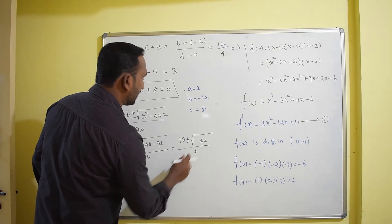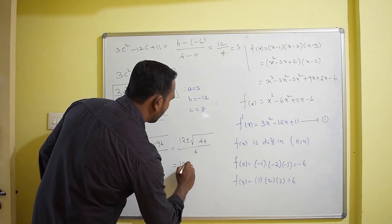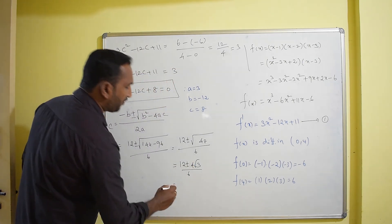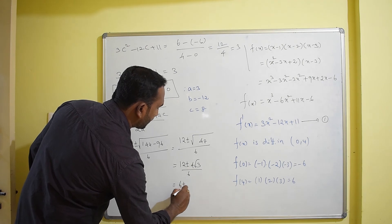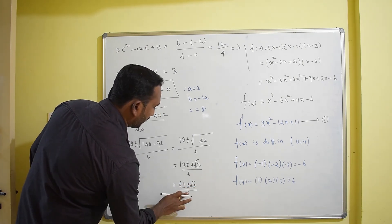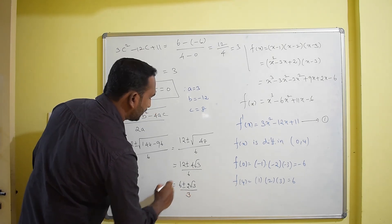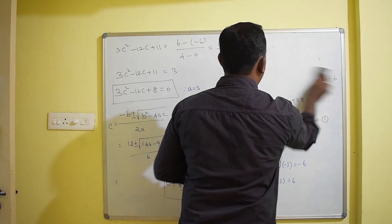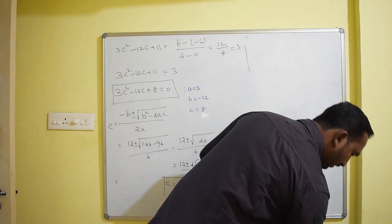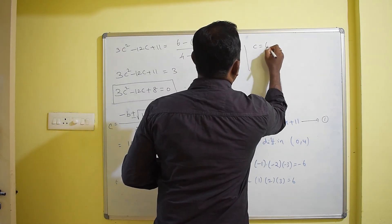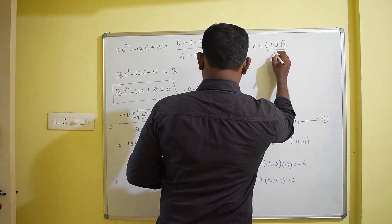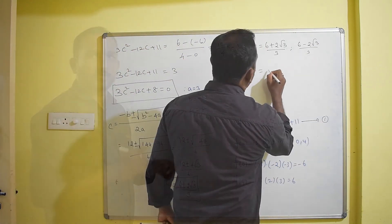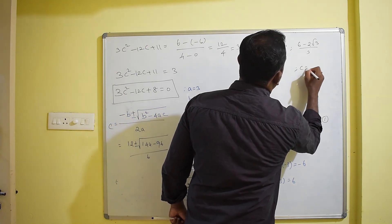Since 48 = 16 × 3, we have √48 = 4√3. So c = [12 ± 4√3] / 6. Simplifying by dividing numerator and denominator by 2: c = [6 ± 2√3] / 3. This gives two values: c = (6 + 2√3)/3 ≈ 3.15, and c = (6 - 2√3)/3 ≈ 0.85.